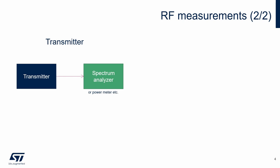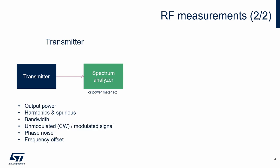In most cases, the spectrum analyzer is used, which is a very versatile instrument for RF measurements. Typical transmitter measurements are measurements of output power, harmonics and spurious, unmodulated and modulated signal, phase noise and frequency offset.